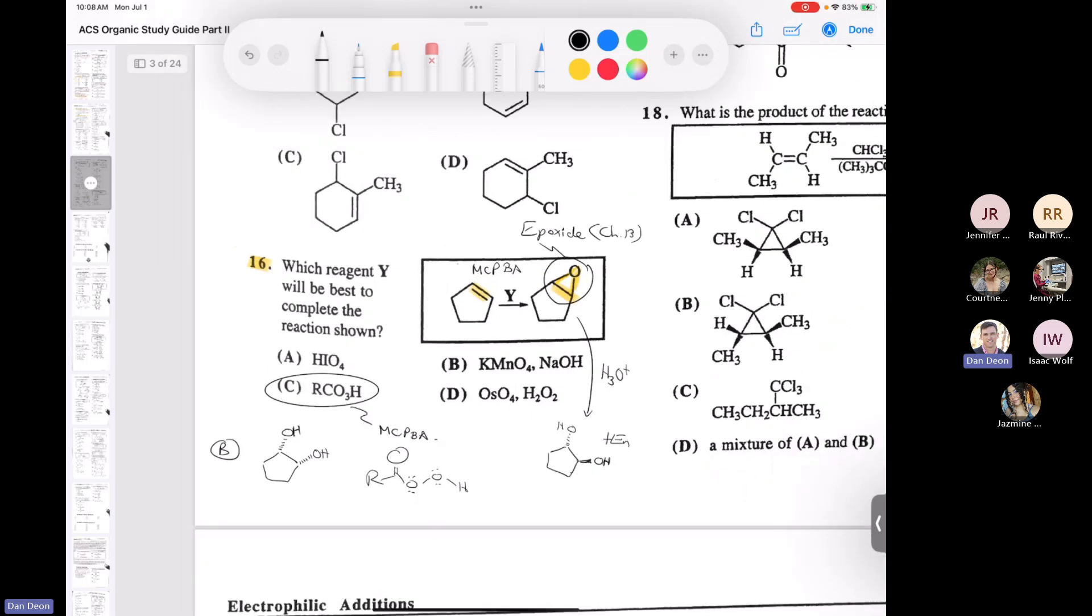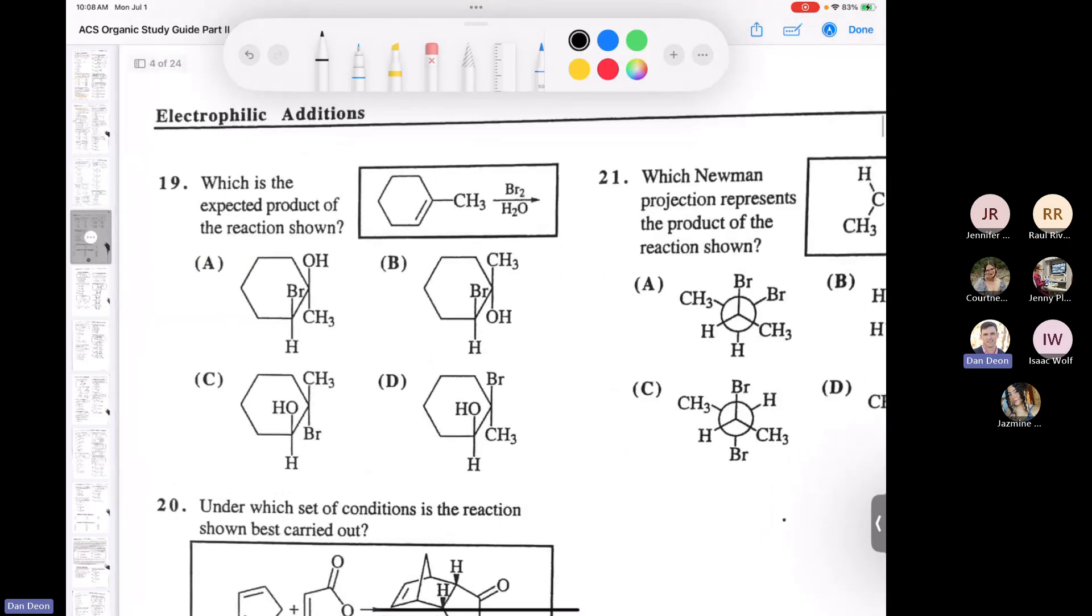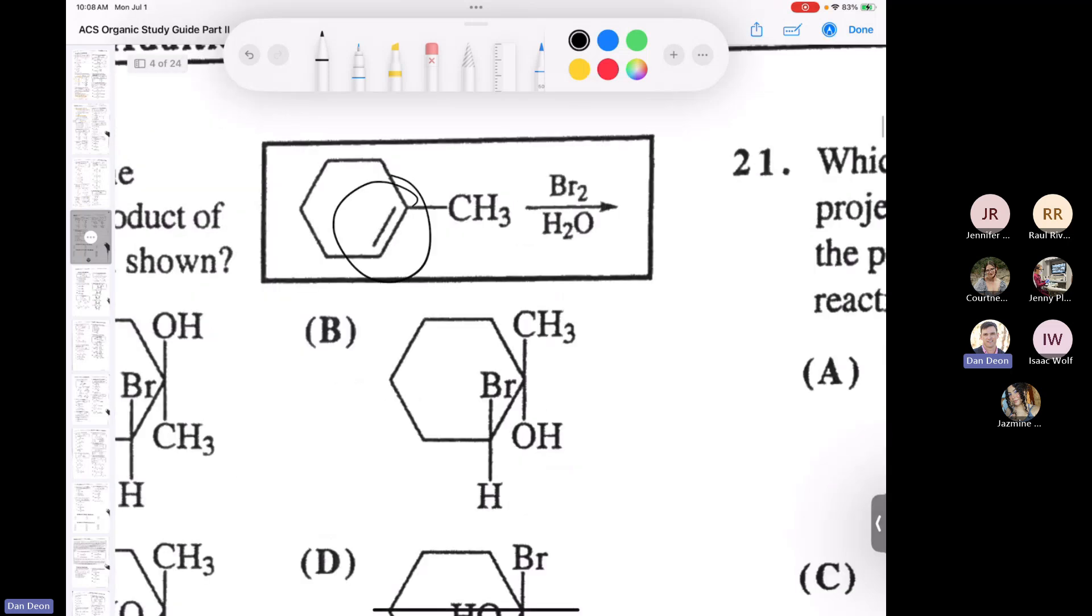Okay, one more question. And that is question number 19. Question number 19. So halohydrin formation. So if I take my double bond, which is unsymmetrical, and I treat it with bromine and water, I'm going to add a bromine and a hydroxyl. Is the hydroxyl going to go on the carbon in red or the carbon in blue? Could anybody answer that? The hydroxyl. OH, will it go on the carbon in red or the carbon in blue?